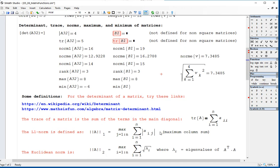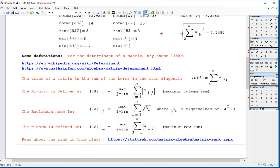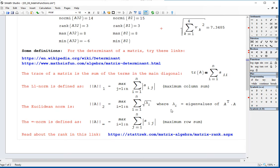I gave you some references here to look up the definition about the determinant of a matrix. And here's the trace of a matrix, the sum of the main diagonal. The L1 norm is defined as the maximum on the columns, the maximum of the column sums. The Euclidean norm is referred to this quantity where lambda 1 are the eigenvalues of A. And then the infinite norm is defined as the maximum sum.